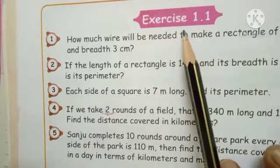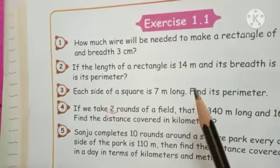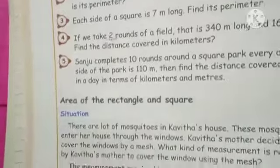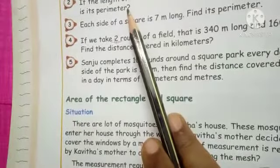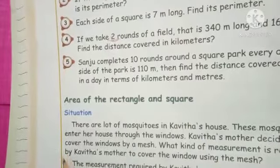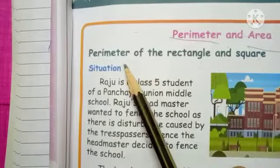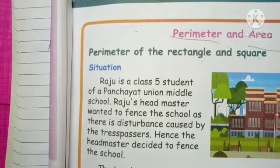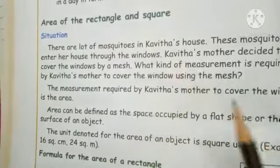Exercise number 1.1 is completed up to the 5th sum. All those sums were asking only for perimeter. Now we move to the next topic: area of the rectangle and square. Before this, you learnt perimeter of rectangle and square. The second topic is area of rectangle and square.